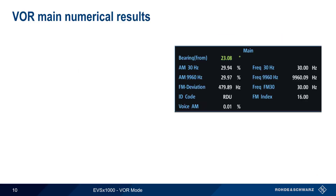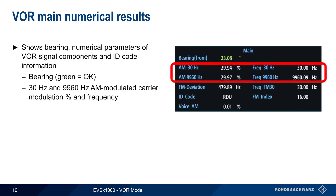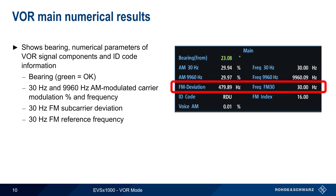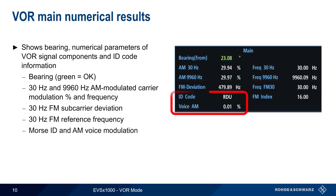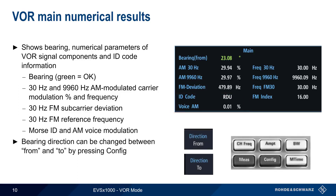The VOR numerical results view includes the derived bearing or radial, various numerical parameters of the VOR signal components, and information on the station's ID code. Bearing is shown in degrees, with green indicating a valid signal. The frequency and modulation for the AM signal components is shown, and both subcarrier deviation and reference frequency are given for the FM component. Parameters of the station ID, either in Morse or AM voice modulated, are also displayed. The bearing direction can be toggled between FROM and TO by pressing CONFIG and then selecting the desired direction.